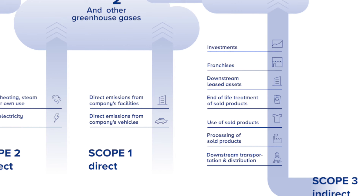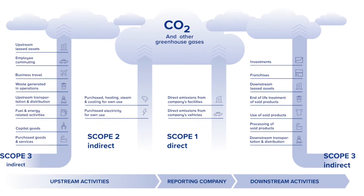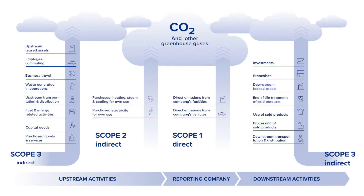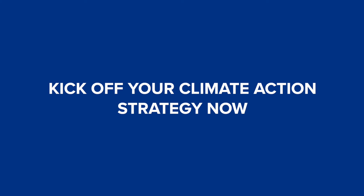An experienced partner can help you develop a full corporate greenhouse gas emissions inventory that includes Scopes 1, 2, and 3. This inventory provides a baseline and gives you the opportunity to continuously measure and reduce your carbon footprint to make the transition to a net-zero economy. Kick off your climate action strategy now!